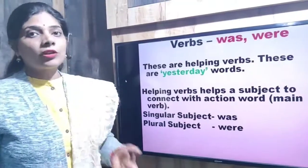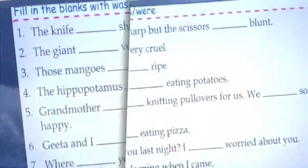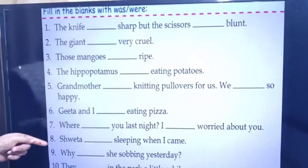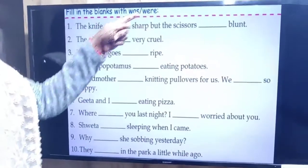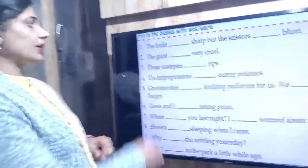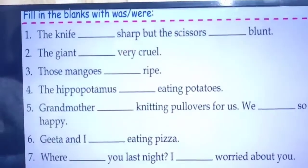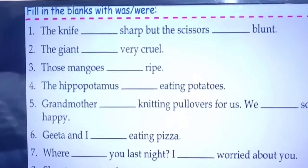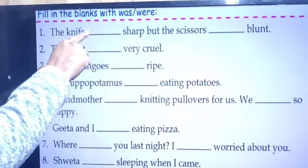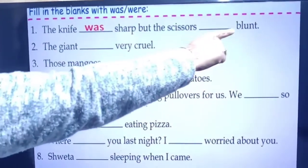Now we will learn more about it through some exercises. Fill in the blanks with was and were. Keep in mind that your subject should be single and your action should be in the past. First: 'The knife ___ sharp.' The subject is knife — knife is singular — so we write: the knife was sharp.